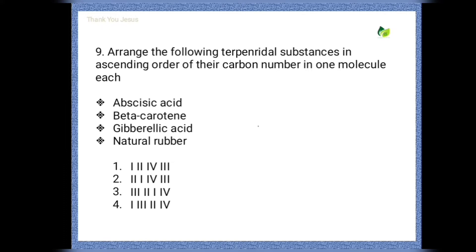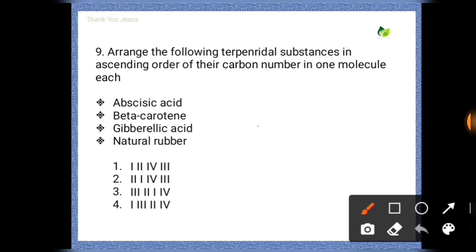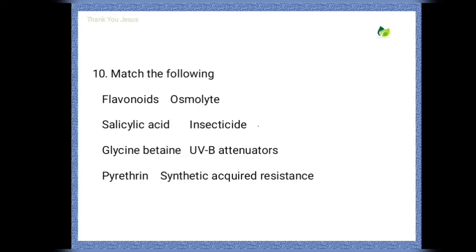Next question: Arrange the following terpenoid substances in ascending order of their carbon number per molecule. From the given phytohormones and chemical compounds, the correct option is the fourth one — the ascending order is: abscisic acid, gibberellic acid, beta-carotene, then natural rubber.